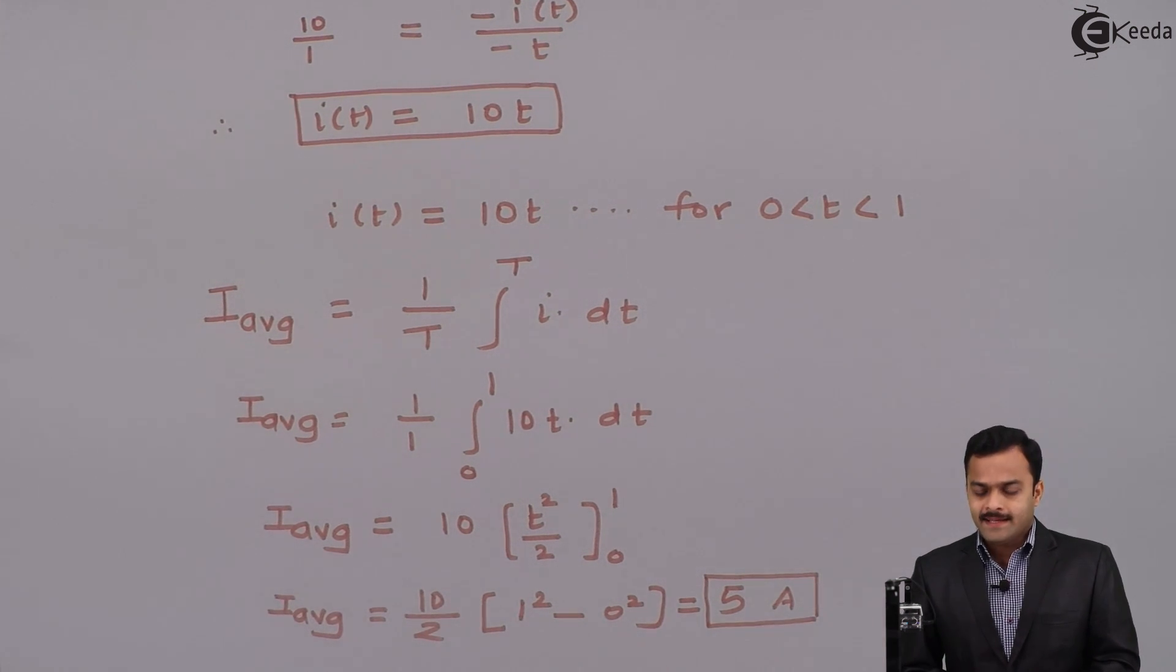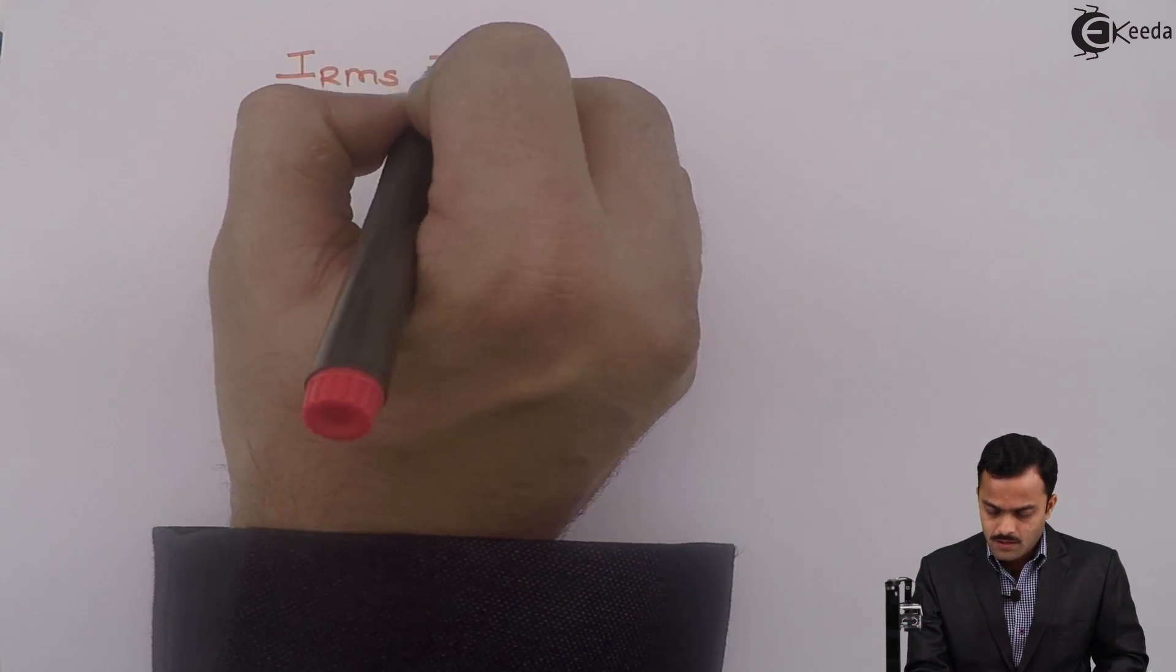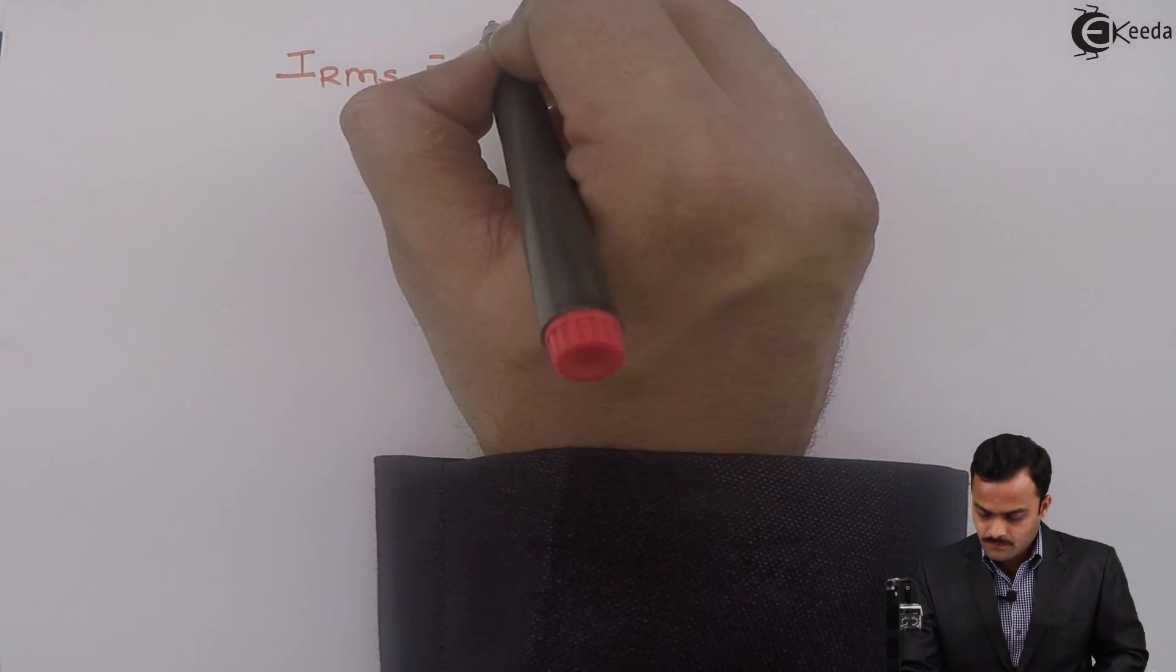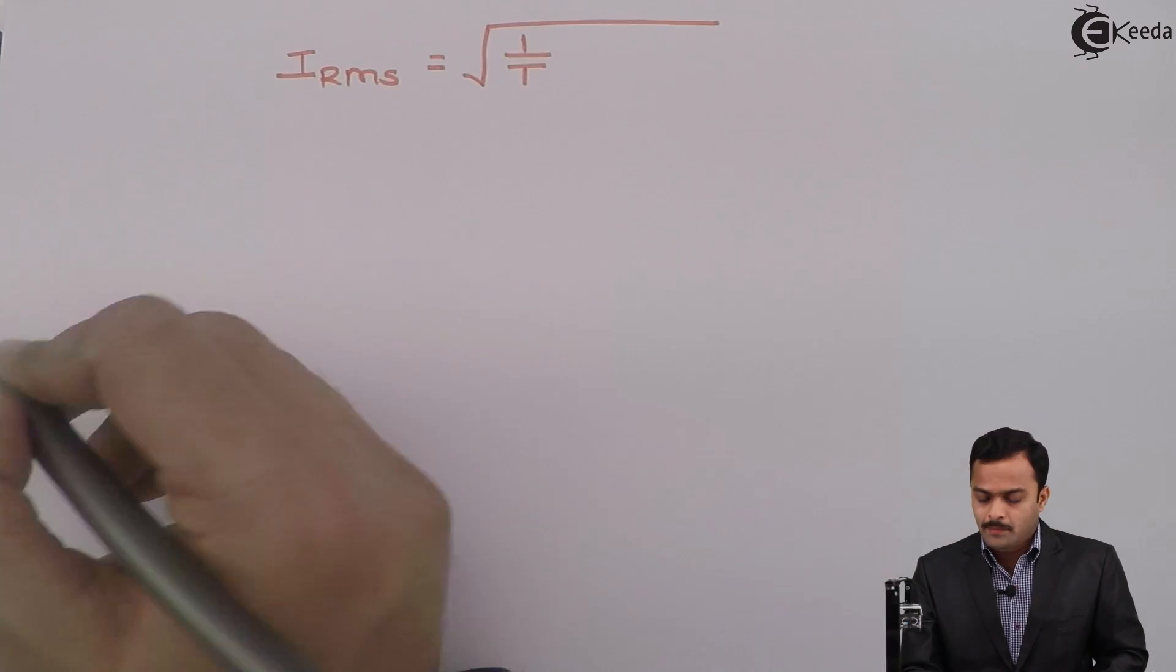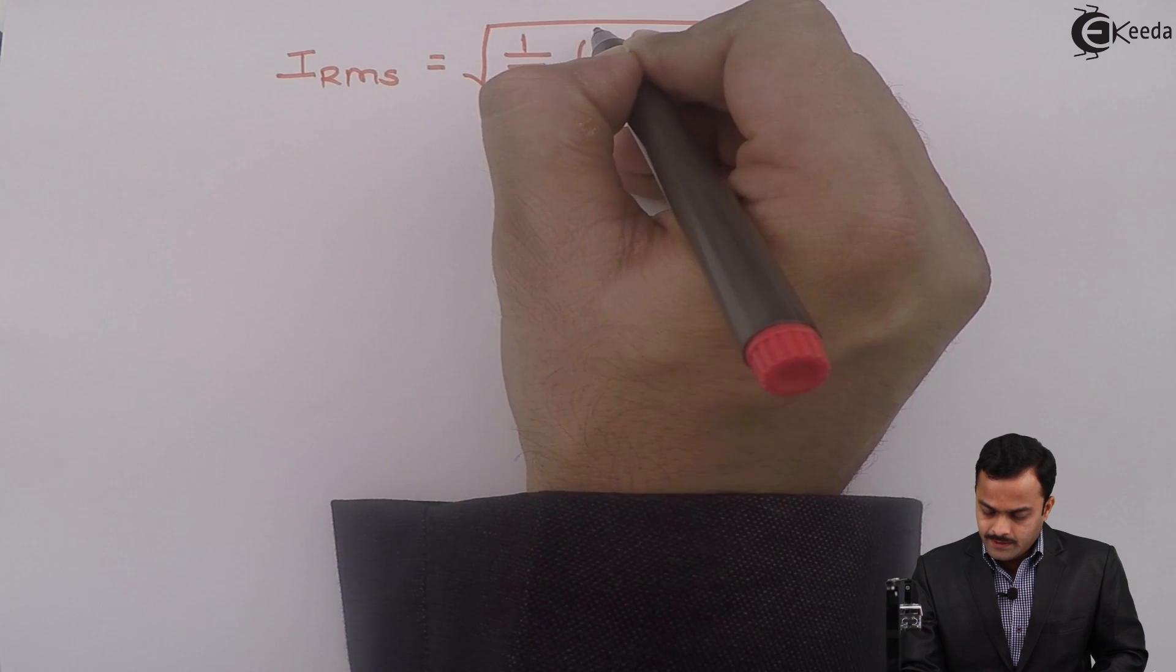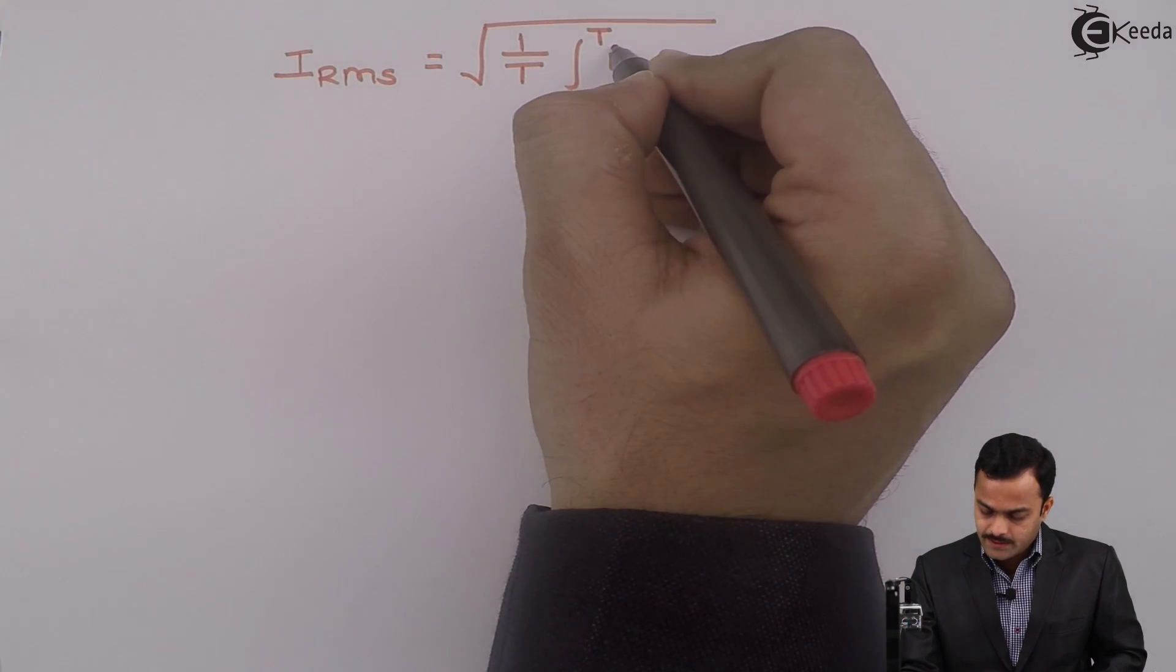Same way, I can get RMS value. To get RMS value, the formula is I_RMS equals root of 1/T integration over a time period T. But this time, it is integration of i².